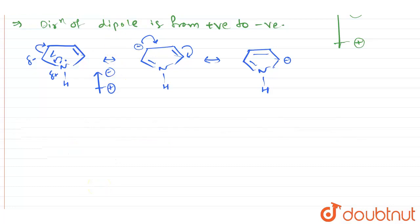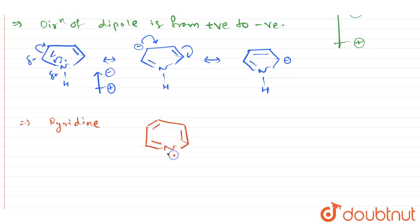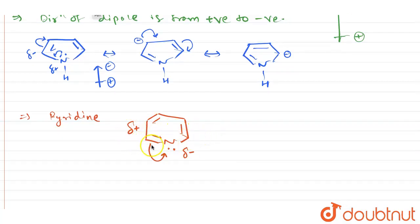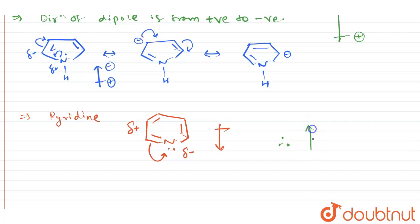Now if I consider the structure for pyridine, the pyridine structure is like this. What happens in pyridine is the double bond present over here will shift, causing a partial negative charge on nitrogen and a partial positive charge on the ring. Therefore, if we see the transfer of electrons, it is from inside the ring to the nitrogen atom. Hence, the dipole for the pyridine ring points downwards.